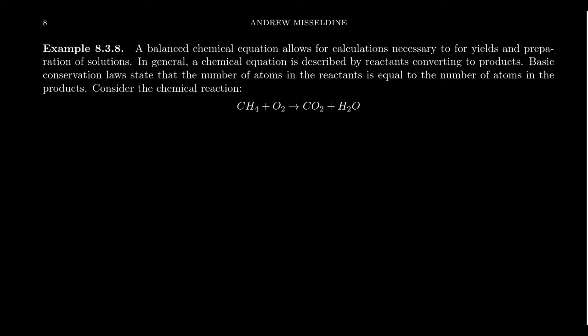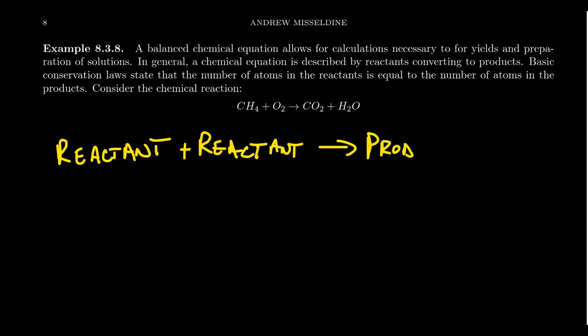Basically, you have some type of reactants that maybe come together, and these can get really complicated, but let's just say we have just two reactants. We have two chemical compounds that react with each other, and then they produce a product of some kind. And for this example, we have two products.